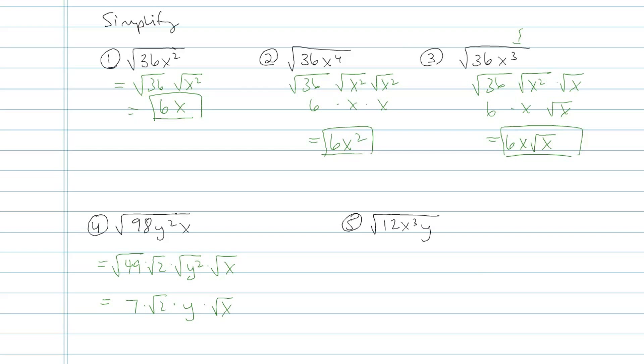Now the last thing I want to do is rewrite this because the proper way to write this in general, the convention is you put the non-square rooted stuff out front and then the square rooted stuff as a product at the end.